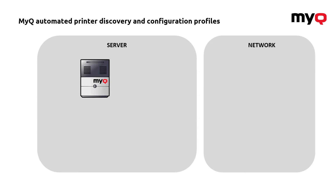The configuration profile is a tool through which you can control all your machines and especially the applications and the settings applied. When it comes to the profile, it consists of a few components: the actual settings for how the device should behave, everything about the finishing options and similar settings. You can use filters through which you can identify specific device types or device models. Based on that, you can divide them into device groups and then use the groups either for accounting or for the application of different access rights or available options. The profile can also install the drivers, and last but not least, the most important part — the embedded application.